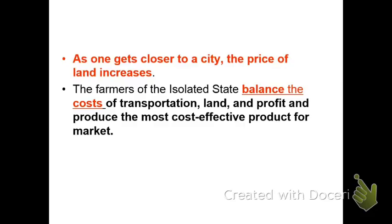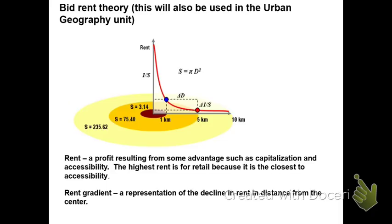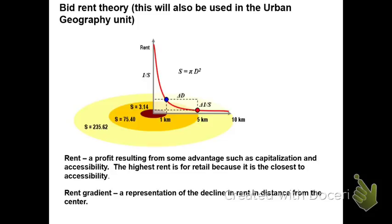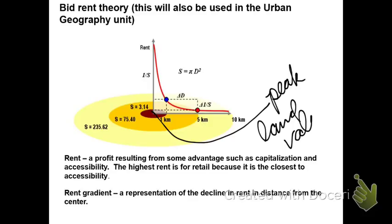Some of this has to do with land value. As you get closer to the city, the price of land increases. Proximity or location is going to play a role in how much the land is worth. We also have to deal with transportation costs and the profit of the commodity that we're growing. This land value comes up in what we call the bid-rent theory, which we're going to use a little bit later in the year. Here at the center of this model, we have what's considered the peak land value, and you can see that land value is highest right there, then drops off considerably as you move away from the center city.